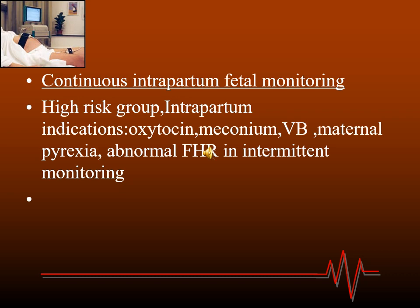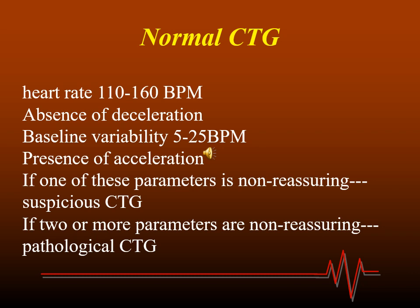For interpretation of cardiotocography (CTG), which is continuous electronic fetal monitoring, we look at four parameters: heart rate, acceleration, deceleration, and baseline variability. Normal heart rate is 110 to 160 bpm. Absence of deceleration — defined as a decrease in heart rate by 15 beats per minute for at least 15 seconds — is normal. Presence of acceleration, an increase in heart rate by at least 15 bpm for at least 15 seconds, is a reassuring sign, though absence of acceleration during labor is not necessarily pathological. Baseline variability should be 5 to 25 beats per minute.